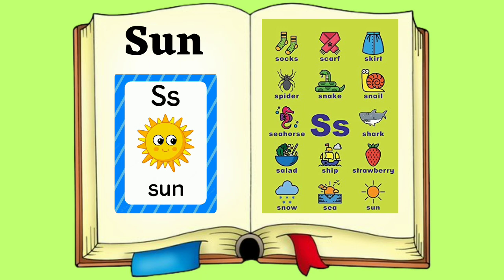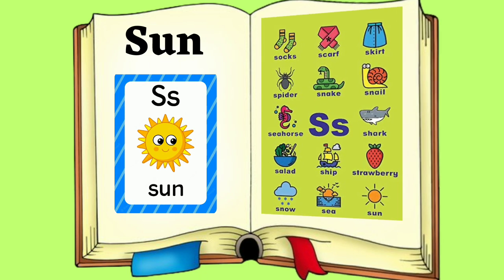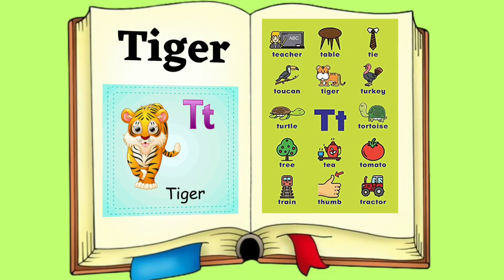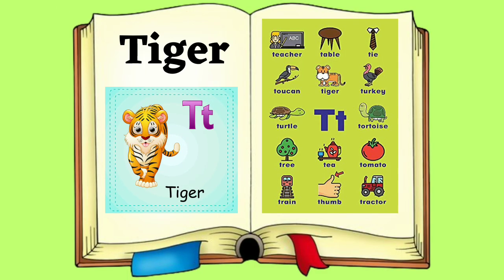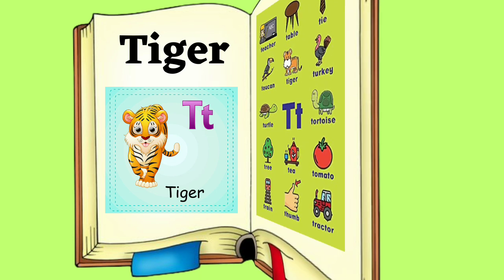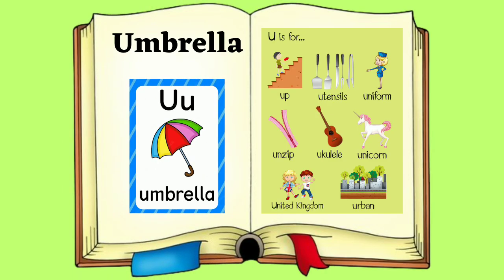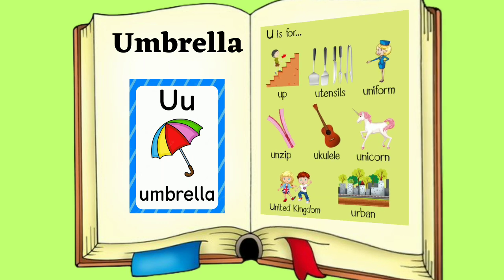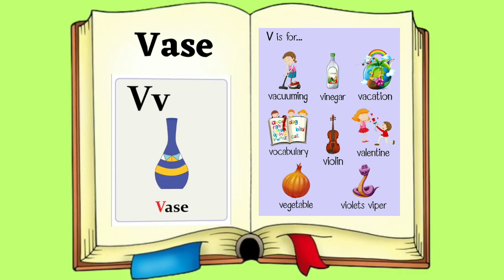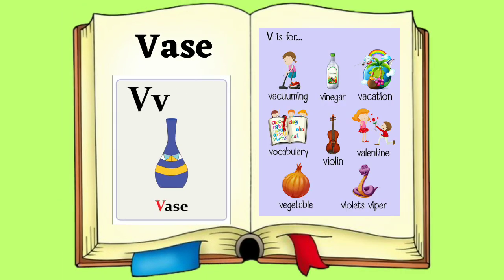Rat. S for Sun. S, S. Sun. T for Tiger. T, T. Tiger. U for Umbrella. U, U.